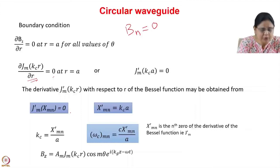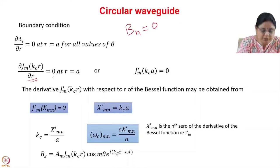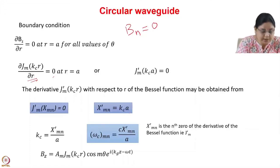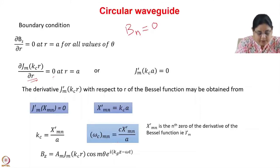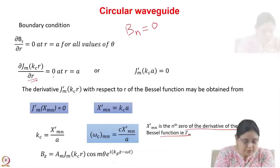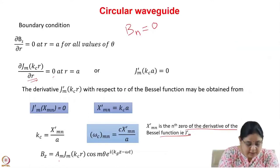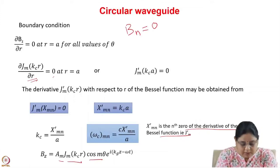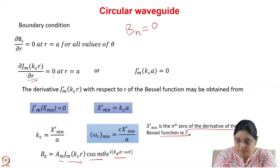So x prime mn, the nth zero of the derivative of the Bessel function Jm, equals kc times a. Thus kc equals x prime mn divided by a. Bz can be written as Am Jm(kc r) cos(m theta) propagating in the z direction with propagation constant kg.